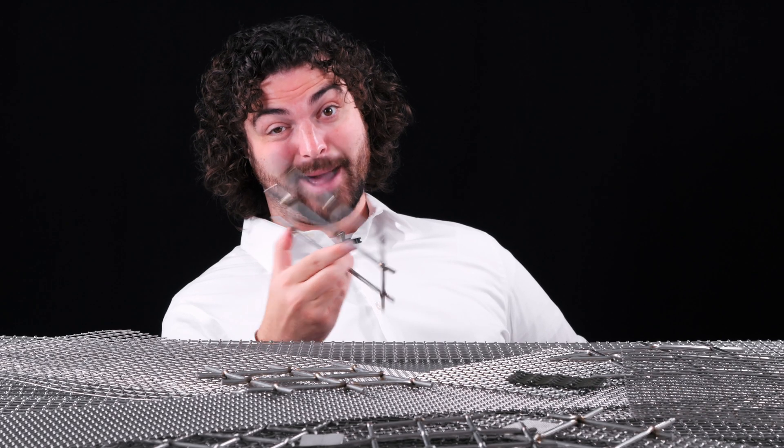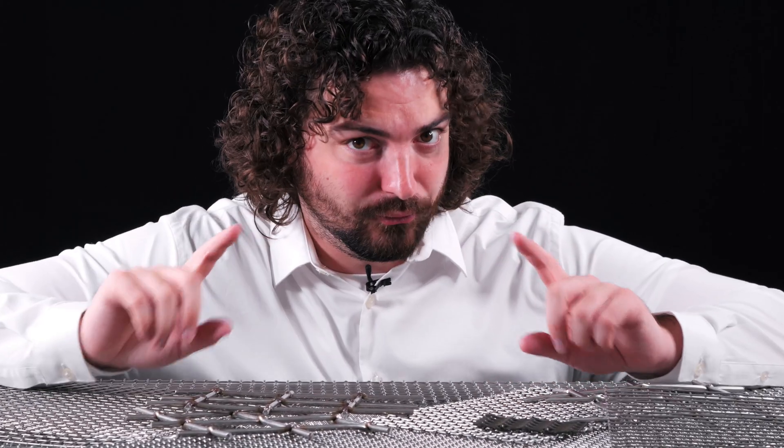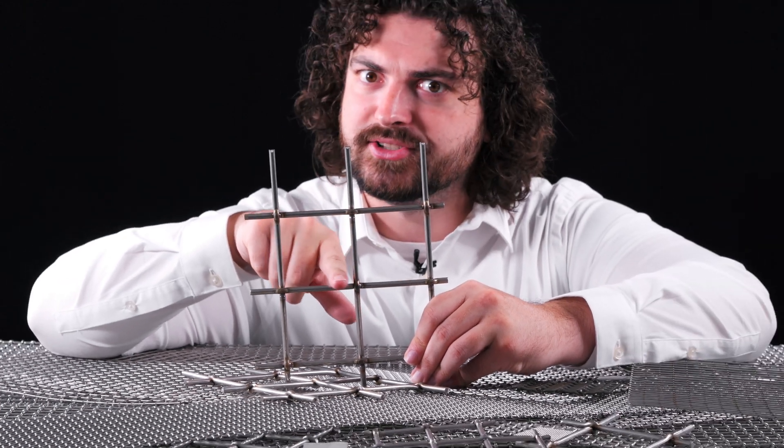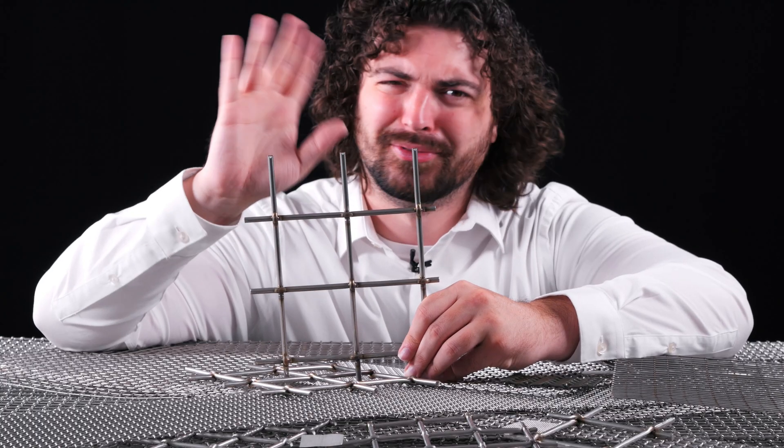And that is aperture size. We now possess the very foundation of woven wire mesh. Without wire diameter, there is no aperture. And without aperture, there is no mesh. Except for filter cloth, but that's a whole thing.